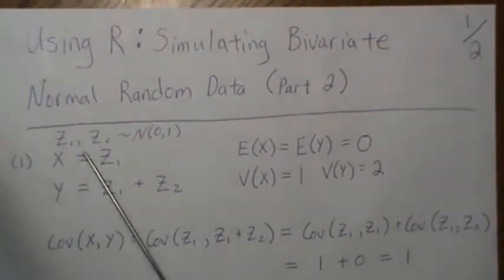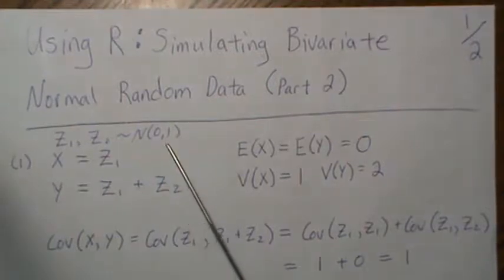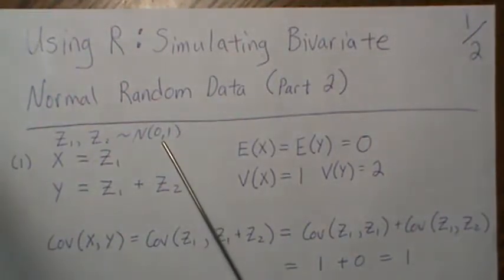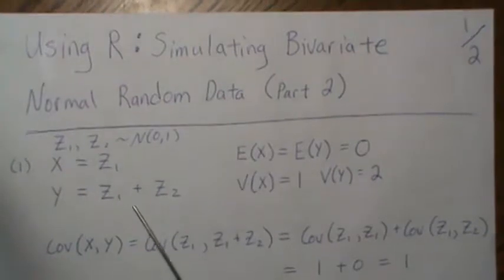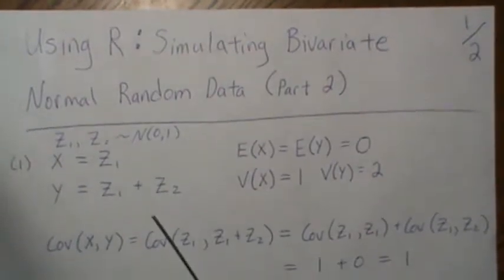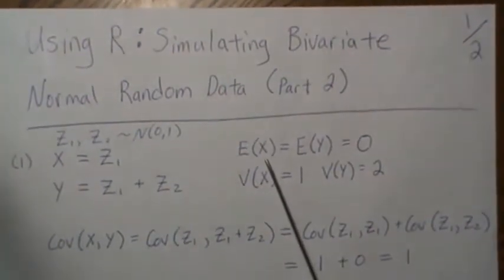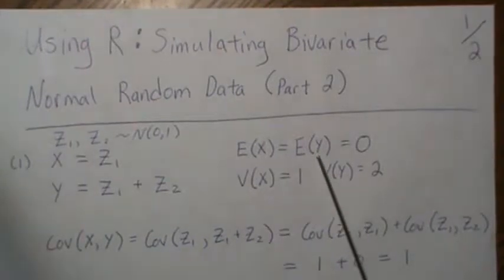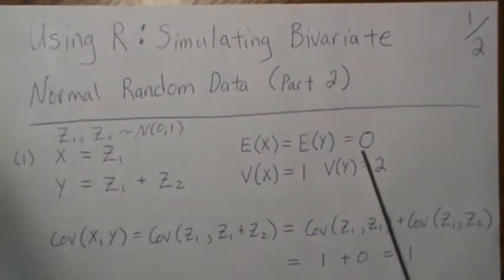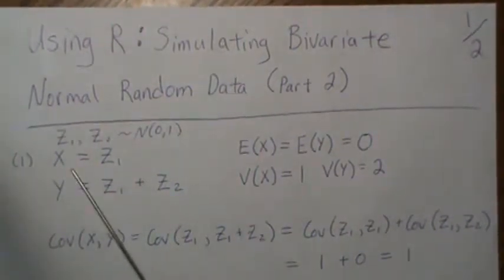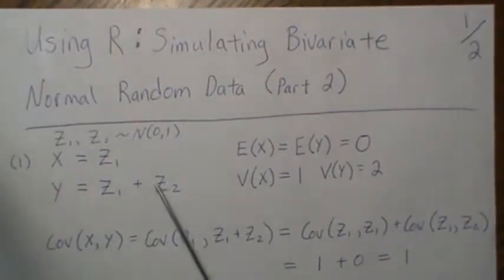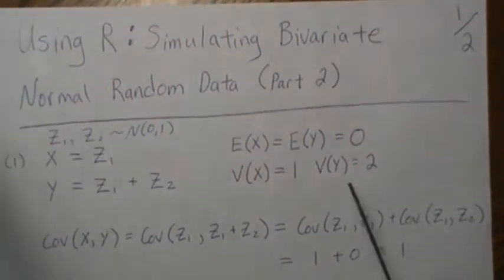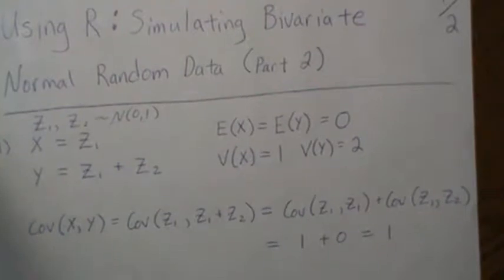In case one we have two variables z1 and z2, both standard normals. If we let x = z1 and y = z1 + z2, it's easy to show that the expected value of both are zero, the variance of x is one, and the variance of y is two.